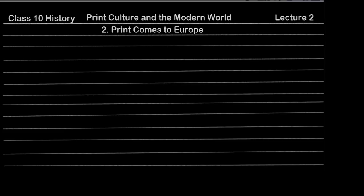So now we have seen how much use of print in Japan and China. Basically we have seen it from Asian perspective. We have seen it from Europe, but now we will see how print came to Europe and how it led to an entire revolution.